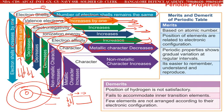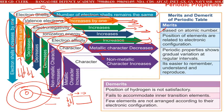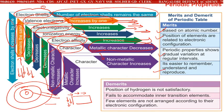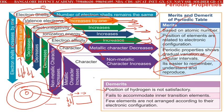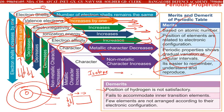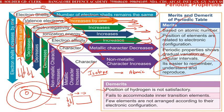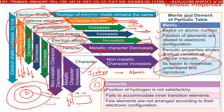What are the merits and demerits of the periodic table? Merits: it is based on atomic number; the position of elements are related to electronic configuration; periodic properties show gradual variation at regular intervals; it is easier to remember, understand, and reproduce. Demerits: the position of hydrogen is not satisfactory because it has different forms — there are isotopes and isobars.